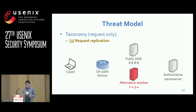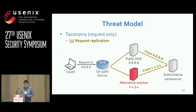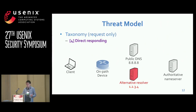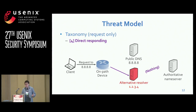The third case is request replication. There is a request to a public DNS; however, this time the request is replicated. One reaches the original public DNS, and the other one reaches an alternative resolver. From the name server, it will receive two identical requests from different IP addresses. The client will receive two responses as well, and typically it will accept the first one. The last case is direct responding, similar to request redirection — the alternative resolver handles the DNS query but does not really perform a query to the name server, and directly returns an answer to the client — an incorrect answer. From the name server, it receives nothing.